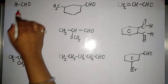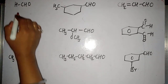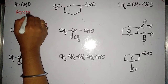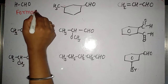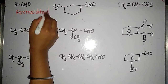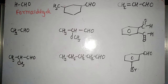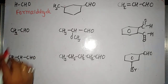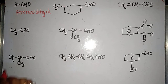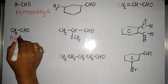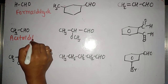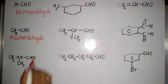The first member is called formaldehyde. Aldehydes containing only one carbon atom are called formaldehyde. If there are two carbon atoms, then it is called acetaldehyde.